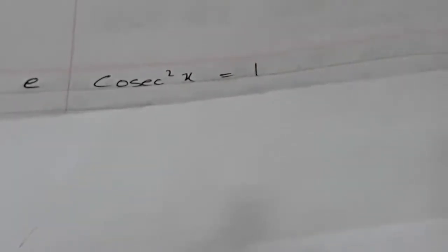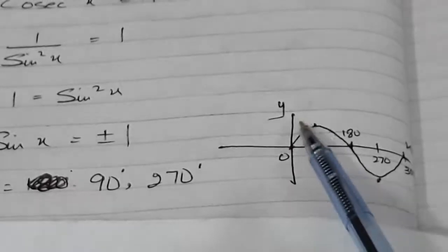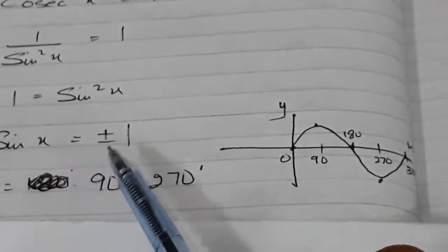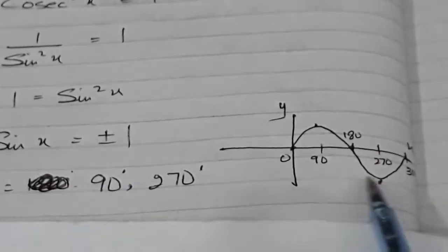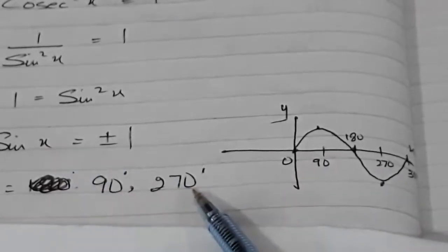Question 6E: cosec²x = 1. Since cosec is the inverse of sine, this becomes 1/sin²x = 1. Cross-multiplying and taking the square root of both sides gives sin x = ±1. We don't need ASTC here because we recall from the sine graph that sin = +1 at 90° and sin = −1 at 270°. So x = 90° and x = 270°.